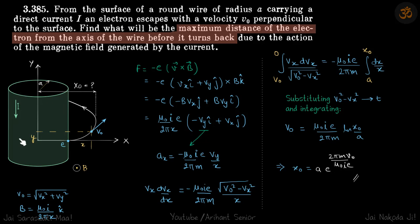We are given a long round wire where current i is flowing. On the surface of this wire, one electron escapes with velocity v0. We need to find the maximum distance of the electron from the axis of the wire before it turns back.